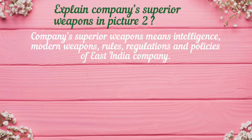Explain the company's superior weapons shown in Picture 2. The East India Company was well equipped with intelligence and modern weapons. Additionally, they also passed many rules, regulations, and policies which helped them to spread their control in our country.